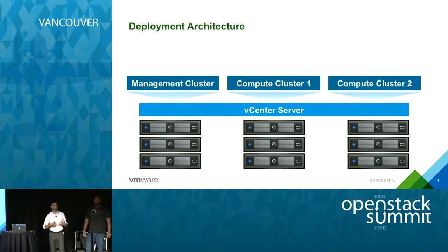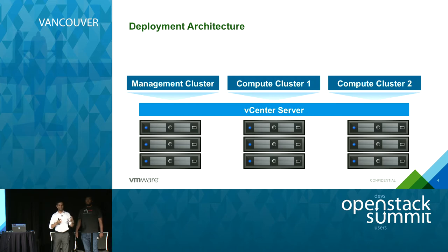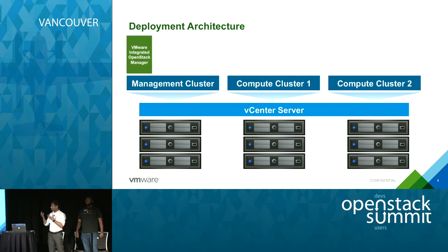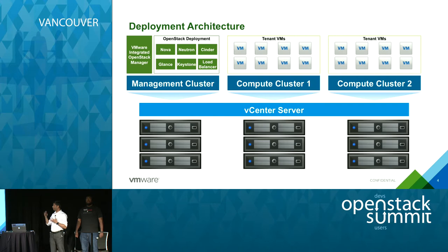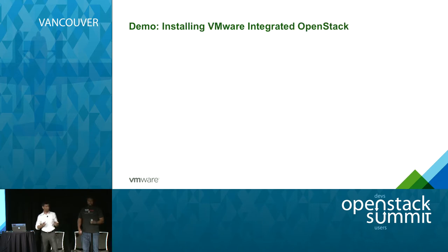When deployed on an existing vSphere infrastructure, you need a management cluster where all your management components live — your OpenStack control plane, scheduler, compute services, vCenter, and NSX if you have it. You deploy a virtual appliance that comes with the VMware Integrated OpenStack manager into that cluster, and use it to deploy your OpenStack services in a highly available manner. Once your OpenStack control plane is up and running on the management cluster, you can use it to deploy tenant workload VMs on your compute clusters.